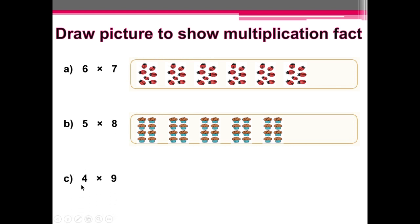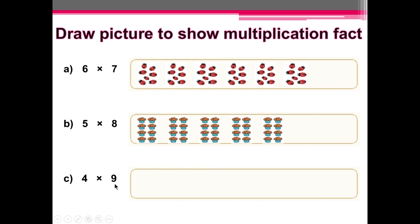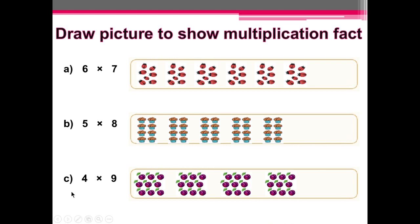Next one: we need to have 4 groups, in which each group should have 9 objects. Let's look at the first group — we have 1, 2, 3, 4, 5, 6, 7, 8, 9. In the first group, we have 9 blueberries. Like this, we want 4 groups: 1, 2, 3, 4. So now we have 4 multiplied by 9.